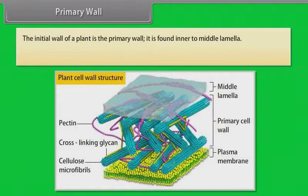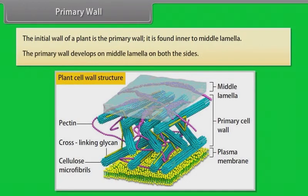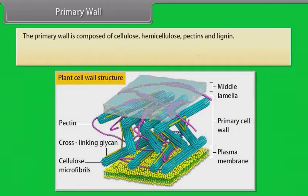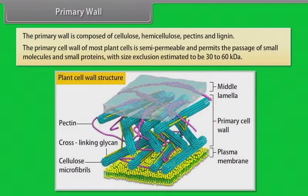Primary wall. The initial wall of a plant is the primary wall. It is found inner to the middle lamella and develops on the middle lamella on both sides. The primary wall is composed of cellulose, hemicellulose, pectins, and lignin. The primary cell wall of most plant cells is semi-permeable and permits the passage of small molecules and small proteins, with size exclusion estimated to be 30 to 60 kDa, or 30,000 to 60,000 atomic mass units.